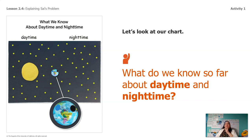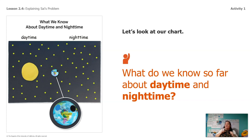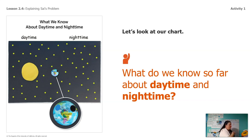What do we see in the sky when it's daytime? That's right — we see the sun. And what do we see in the sky when it's nighttime? That's right — we see the stars. So when it's daytime, the part of the earth that you're on is facing the sun. And when it's nighttime, the part of the earth that you're on is facing the stars.